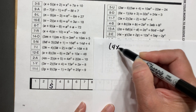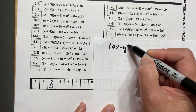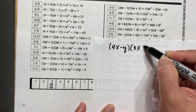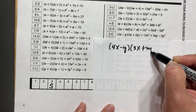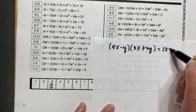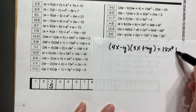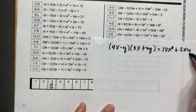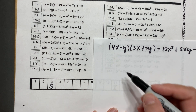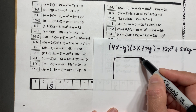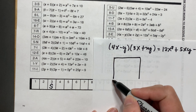We have (4x − y)(3x + 2y) is equal to 12x squared plus 5xy minus 2y squared. We will do the box method.